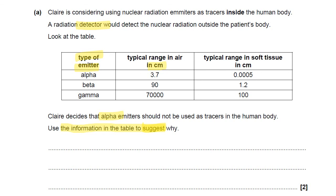We don't really need to focus on beta or gamma except in a comparative sense. Think back to what I said: use the sections of that diagram and make two points.